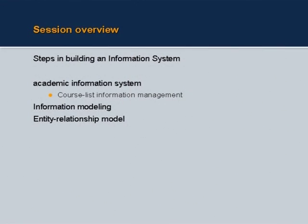In this first session we will talk about information systems and quickly look at the steps in building one. We will take as an example an academic information system — assume all of you are students with roll numbers registering for courses in a semester — and see how course lists are managed through a COBOL programming example. We will then see the implications and disadvantages of using COBOL, through which we will go to information modeling and discuss the entity relationship model.